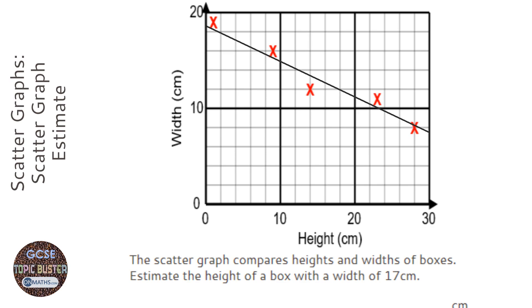Now, it's asking us to estimate the height, and it's giving us the width. And that's really important, because the width is up the side. So a common mistake would be to read 17 from the bottom, but the height is at the bottom.